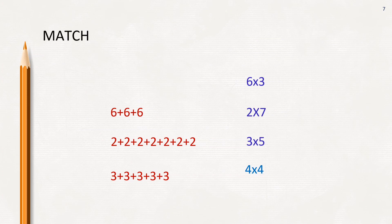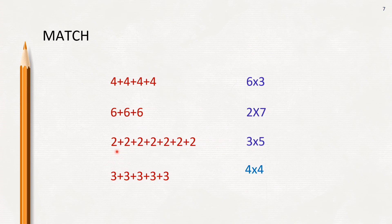Here, match the repeated addition with the multiplication sentence. 4 four times is 4 into 4. 6 three times is 6 into 3. And 2 seven times is 2 into 7. And 3 five times is 3 into 5. So this is the addition sentence and it has to be matched to the multiplication sentence.